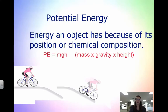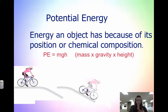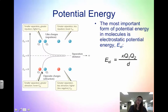Potential energy is the energy that an object has because of its position or its chemical composition. To calculate potential energy we use PE equals m times g times h — that's mass times gravity times height. Potential energy is like the stored energy. At the top of this hill she has a lot of potential energy. For molecules, we can think of potential energy as the stored energy from attractions and repulsions.